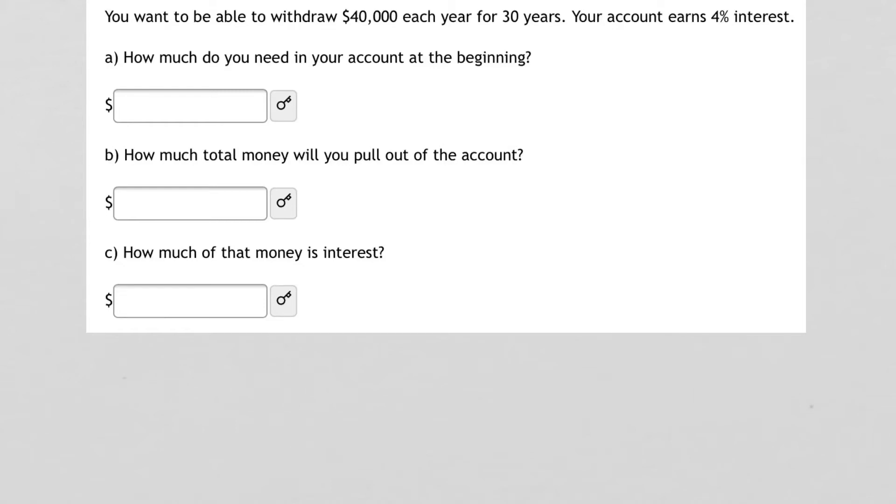You want to be able to withdraw $40,000 each year for 30 years. Your account earns 4% interest. How much do you need in your account at the beginning? How much total money will you pull out of the account? And how much of that money is interest?